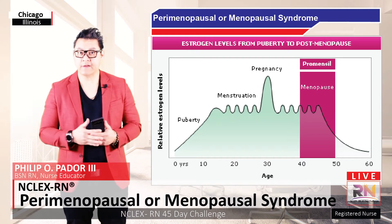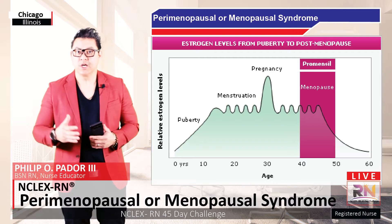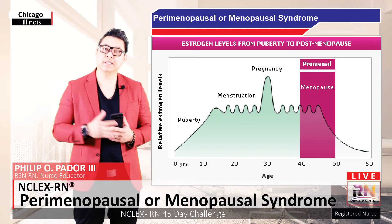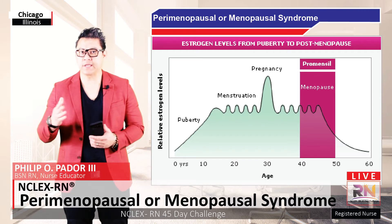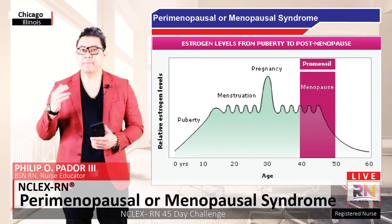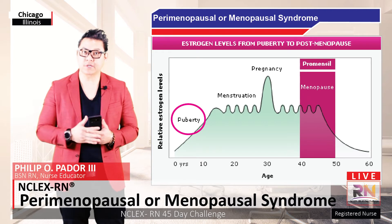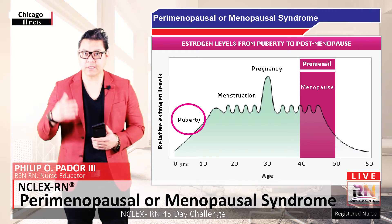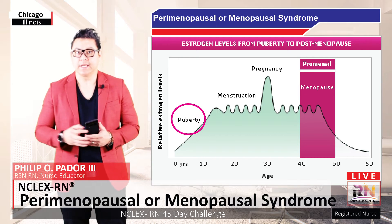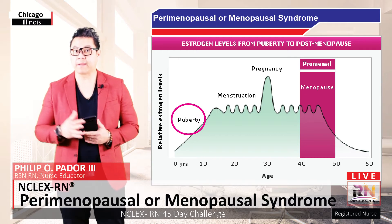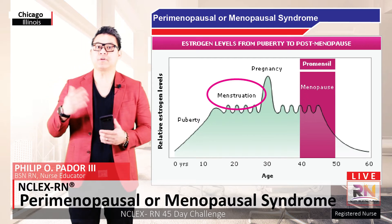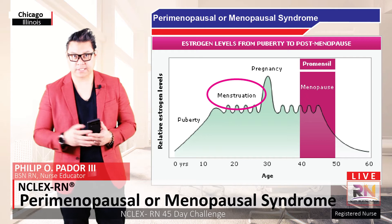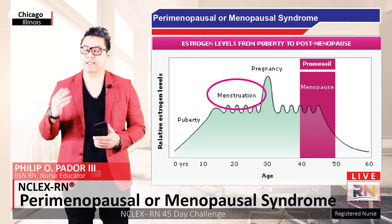Here is a graph of estrogen concentrations on the y-axis and age on the x-axis, ranging from 10 to 50 years. During puberty, estrogen concentration increases — this is when adolescents develop secondary sex characteristics, and then during adolescence they begin having their menstrual cycle. During the menstrual cycle, estrogen concentrations fluctuate but still remain relatively high.